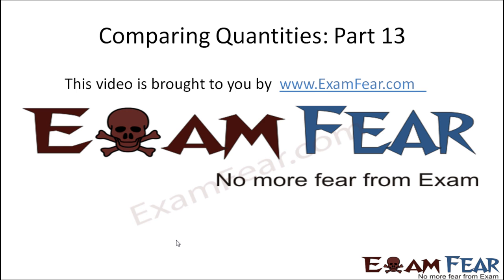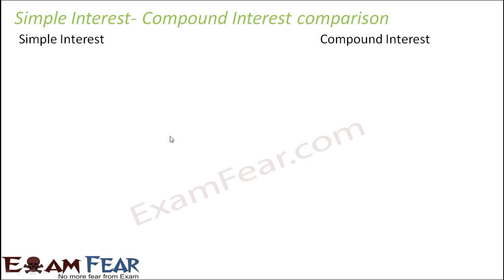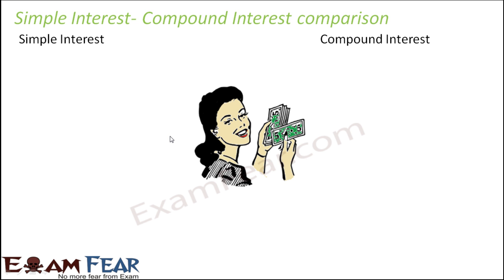This video on comparing quantities part 13 is brought to you by ExamFear.com. We took the same example where Sheila had deposited rupees 15,000 for two years at the rate of interest of five percent per annum, and we calculated both simple interest and compound interest. We found a difference between the amounts she received in both cases, so let us look at a clear-cut comparison of the two.